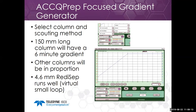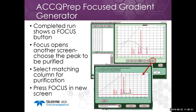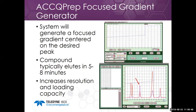On our system, you select the column and scouting method — a 150 mm long column will have a six-minute gradient, and other column sizes are in proportion. I prefer a 4.6 mm column to minimize sample and solvent use. After the scouting run, I hit the Focus button, which opens a screen to choose the peak to be purified. Pressing Focus generates a focus gradient where the compound elutes in five to eight minutes, increasing resolution and loading capacity over a default gradient. It includes a wash step that can be removed for cleaner samples, and all peptide runs in this presentation use the focus gradient generator.